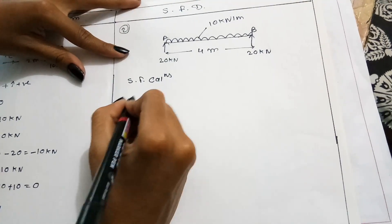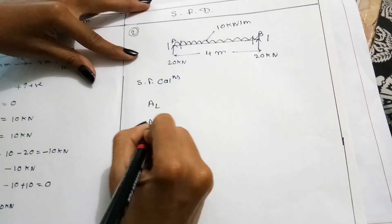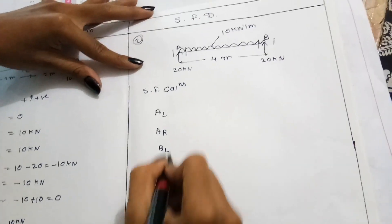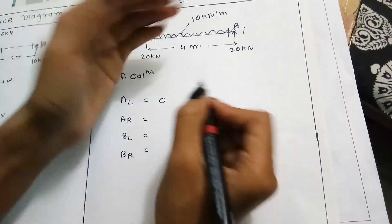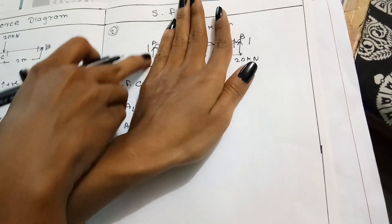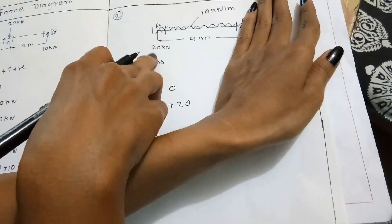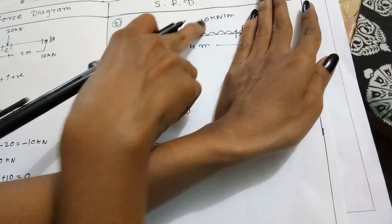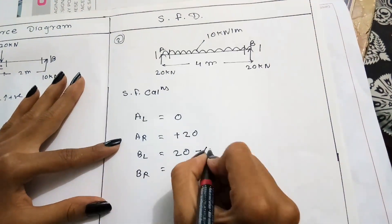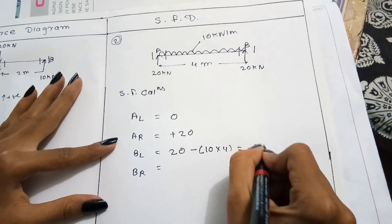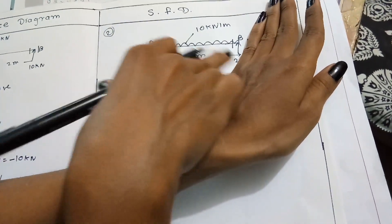Shear force calculations: A-left, A-right, B-left, B-right. On the A-left side there are no forces, so A-left equals 0. On the A-right side there is one force going upward, which is positive, so A-right equals plus 20 kN. At B-left, there is one force going upward of 20 kN and one UDL force downward of 10 kN per meter into 4 meters, giving 20 minus 40 equals minus 20 kN.